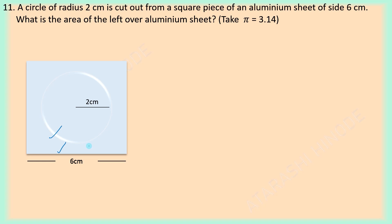Now for finding the area of the square — we know the formula: area of a square equals side × side. Here the side is 6 cm, so it is 6 cm × 6 cm.